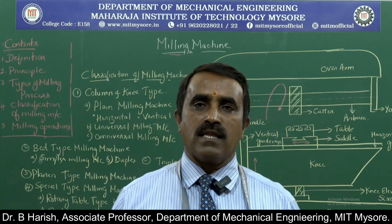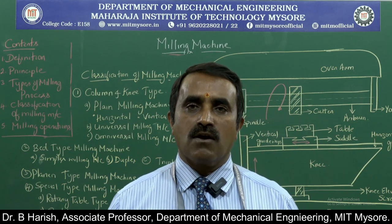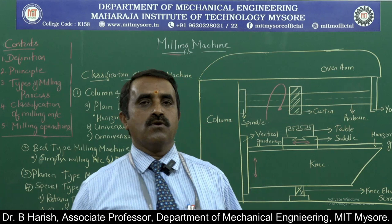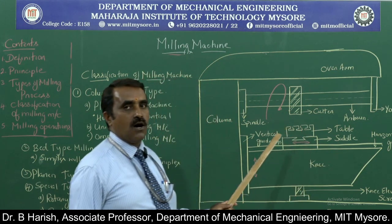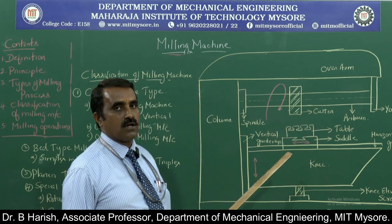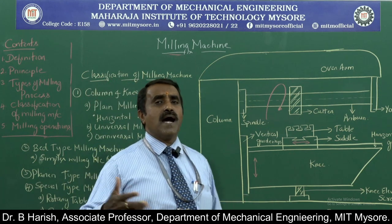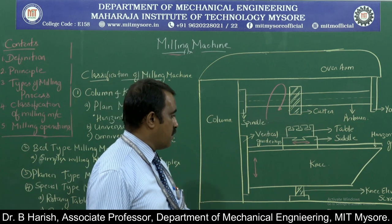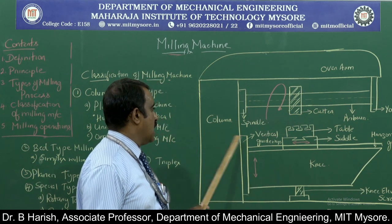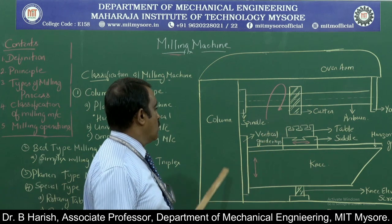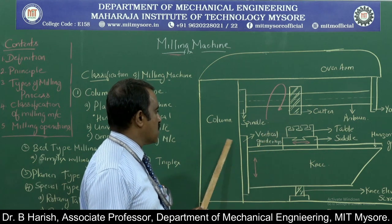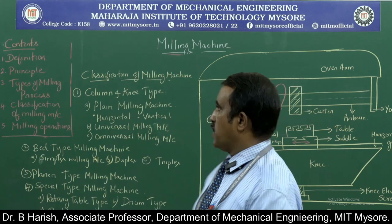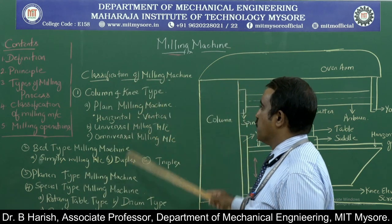To understand the classification, we should know the parts of a common general-use milling machine. This is the horizontal type of milling machine. The two major parts are the column and knee, and hence the first type is called column and knee type of milling machine.